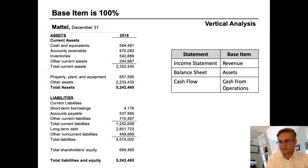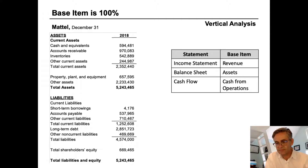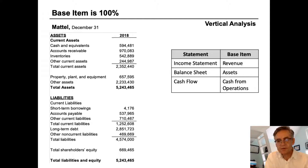For a vertical analysis, all the items in the financial statement are expressed as the percent of a base item. For income statements, the base item is usually total revenue, and for a balance sheet, it's usually total assets, and for a cash flow statement, the base number is usually cash flow from operations.